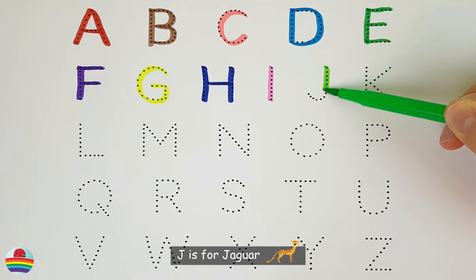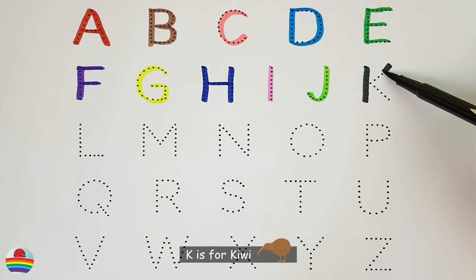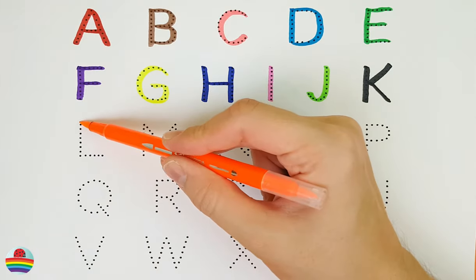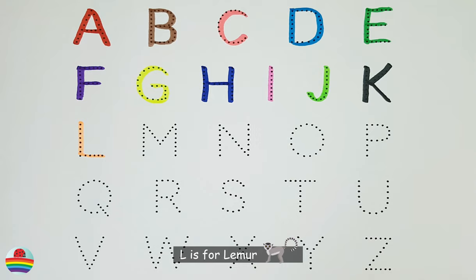J. J is for jaguar. J. K. K is for kiwi. K. L. L is for lemur. L.